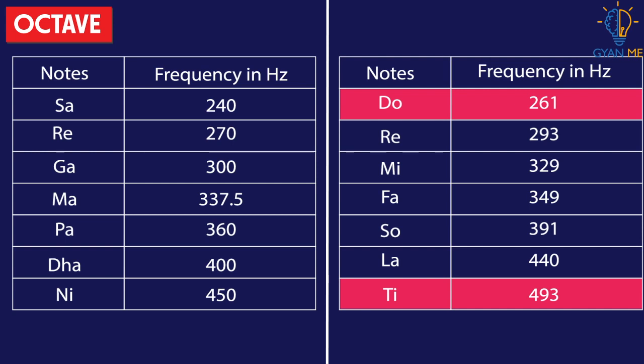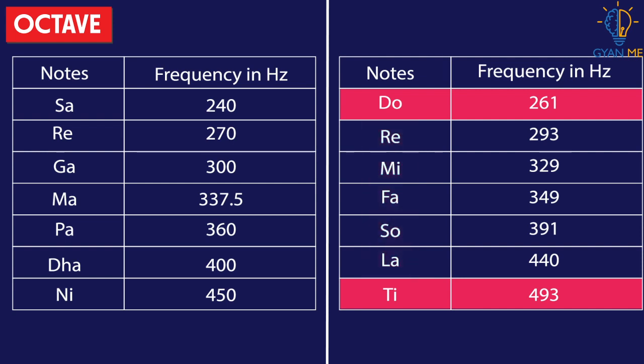This is clear from the table that the frequency of the first note Do is 261 hertz, which increases as we go down to Re, Mi, Fa, So, and so on till the last note, whose frequency is 493 hertz — approximately double that of the first one. Thus, an octave is a group of melodies where the last frequency doubles and the eighth note repeats as the first.